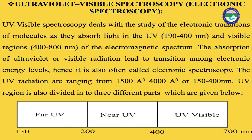Electronic spectroscopy is also known as UV-Visible spectroscopy. The UV region can be categorized into three classes: far UV (150–200 nm), near UV (200–400 nm), and visible/UV (400–700 nm). These are categorized on the basis of different frequency ranges.